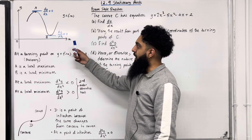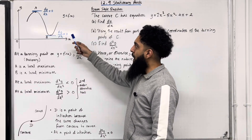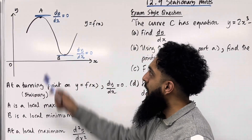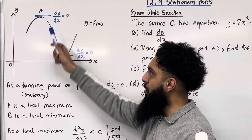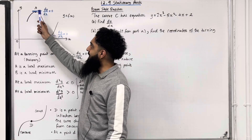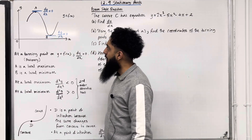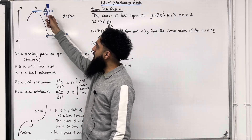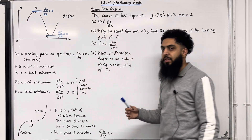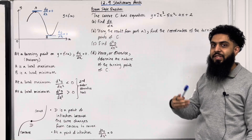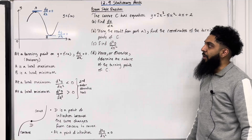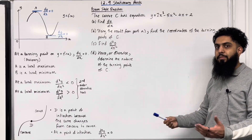Consider the following coordinate grid. I've drawn the curve y = f(x) and I've labelled the points A and B on the curve. At A, the tangent is horizontal, and at B, the tangent is horizontal. This means that the gradient of the tangent at A and B is 0. Hence, the gradient function dy/dx is equal to 0 at A and B. A and B are called turning points — you can also call them stationary points.